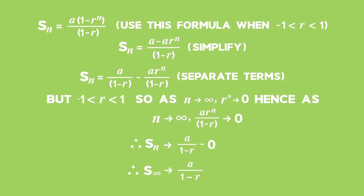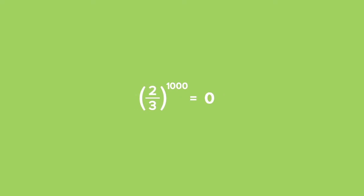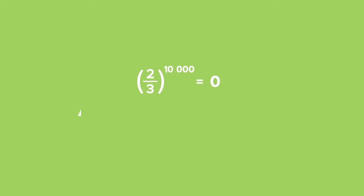Try this on your calculator. Enter a fraction — for example, 2 over 3 — then raise it to the power of 10, then 100, then 1,000, then 10,000. What do you notice? As n increases, r to the power of n approaches 0.